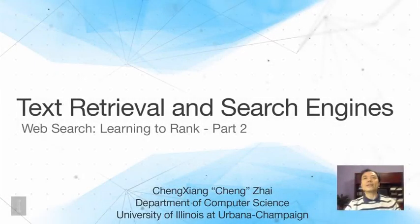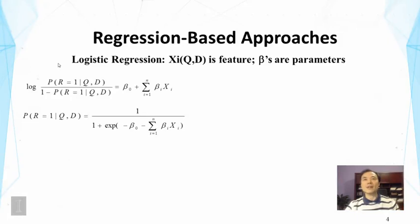Now let's take a look at the specific method that's based on regression. This is one of many different methods — in fact, it's one of the simplest methods, and I choose it to explain the idea because it's simple. In this approach, we simply assume that the relevance of a document with respect to the query is related to a linear combination of all the features.